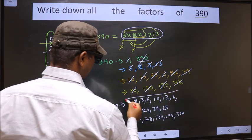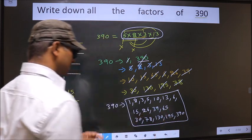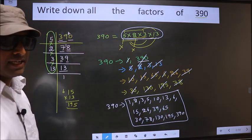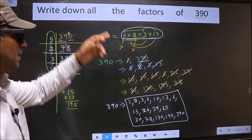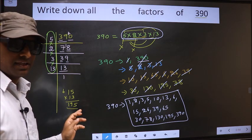These are all the factors of 390. Am I clear?